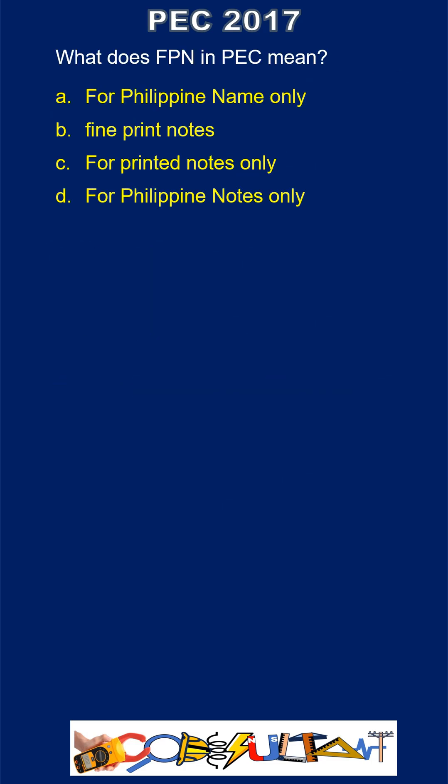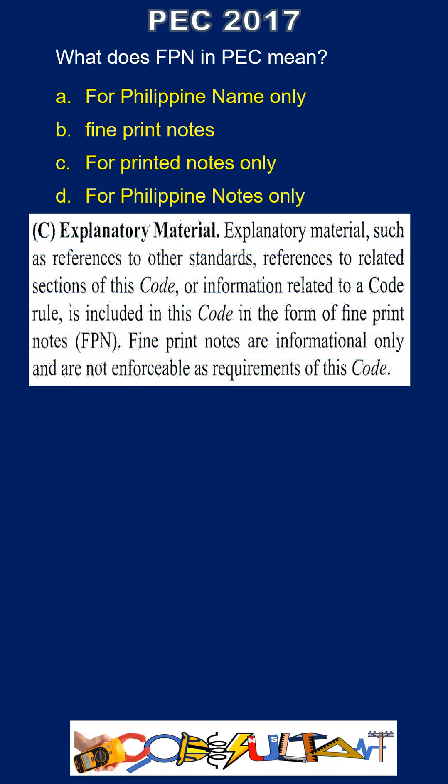Section 1.0.1.5 C: Explanatory material, such as references to other standards, references to related sections of this code, or information related to a code rule, is included in this code in the form of fine print notes (FPN). Fine print notes are informational only and are not enforceable as requirements of this code. Hence, the answer is letter B.